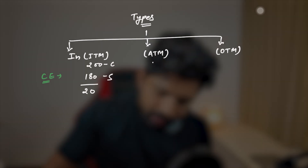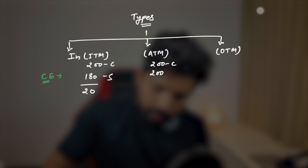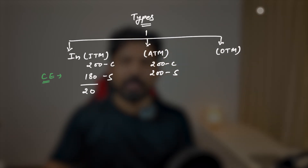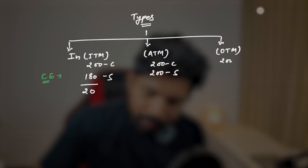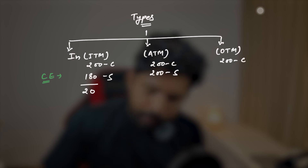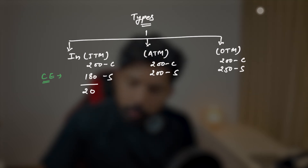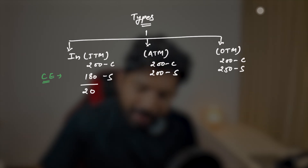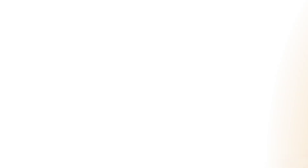For at the money (ATM), the current price is 200 and you buy the option at a strike of 200 — that is at the money. For out of the money (OTM), the current market price is 200 and the strike price is 250, so the market has to rise 50 points to give you profit — that is out of the money. Hopefully that's crystal clear with no doubt.